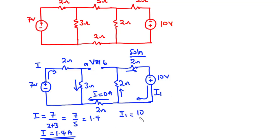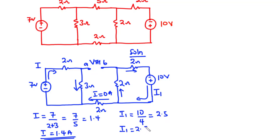For I1, we have 10 divided by 2 plus 2, and 10 divided by 4 is 2.5. So we have I1 to be equal to 2.5 amperes.